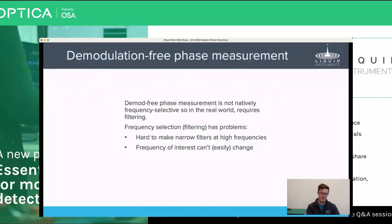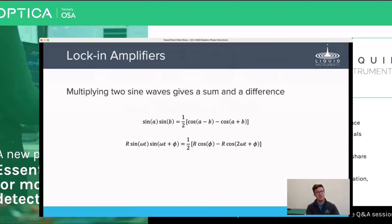It's hard to make narrow filters at high frequencies and the way that you typically overcome this is to use a lock-in amplifier.